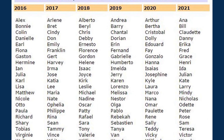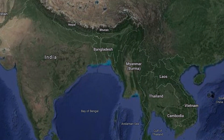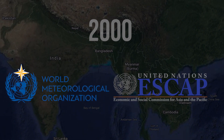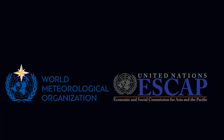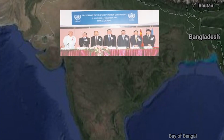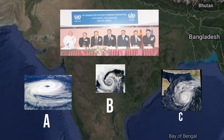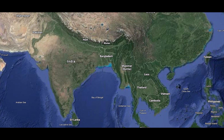Jab cyclone ko naam dena shuru hua tha, tab isse sirf mahilaon ke naam diye jaate the. Lekin baad mein isse badal diya gaya. Indian Ocean mein cyclone ko naam dena 2000 se shuru hua. World Meteorological Department aur United Nations Economic and Social Commission for Asia Pacific ka 27th summit 2004 mein India mein hua tha. Is session mein ek formula tayyar kiya gaya jisse ham cyclone ko naam rakh sakte hain.